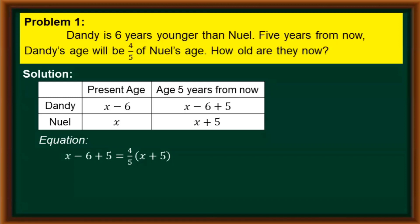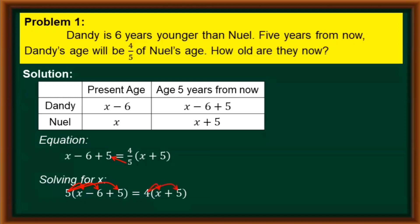We now start solving for the value of x. It would be easier if we cross-multiply the denominator of four-fifths to the left side. This becomes five times the quantity x minus six plus five equals four times the quantity x plus five. Using the distributive property, we multiply five to all terms in the first parentheses and four to the terms in the second parentheses, giving us 5x minus 30 plus 25 equals 4x plus 20.